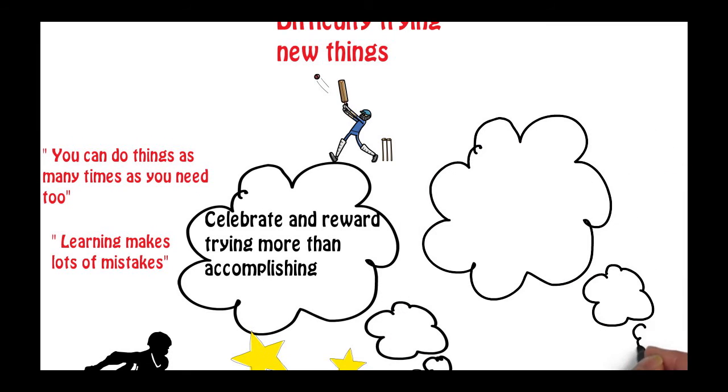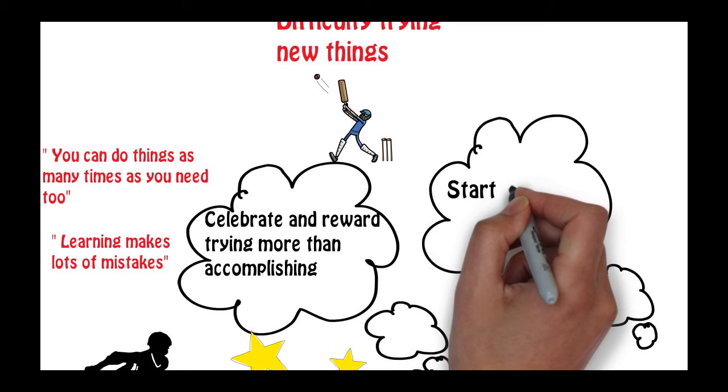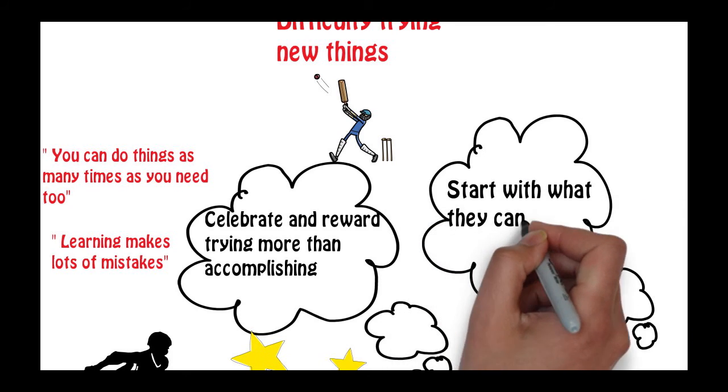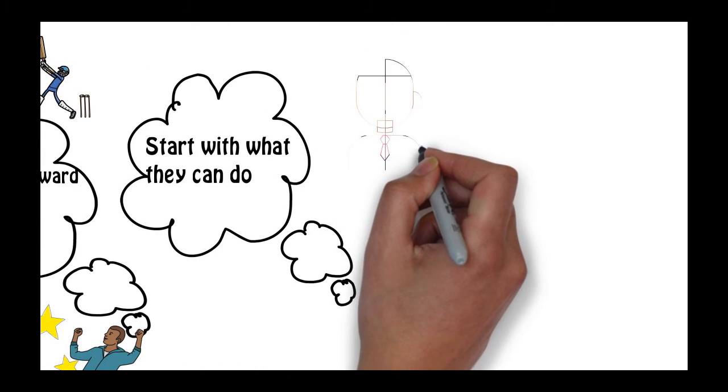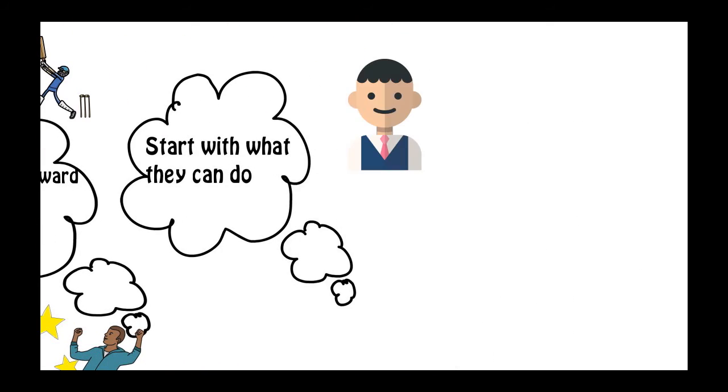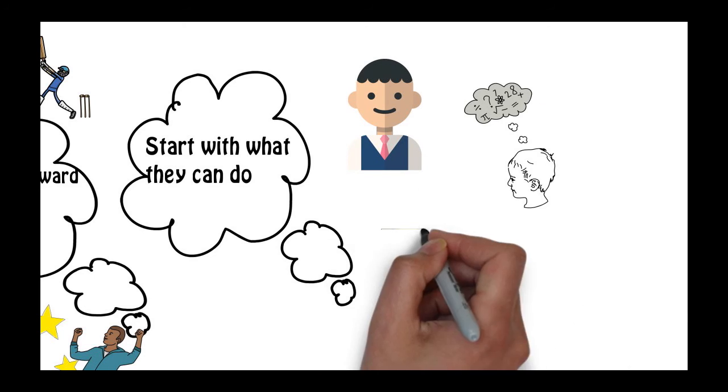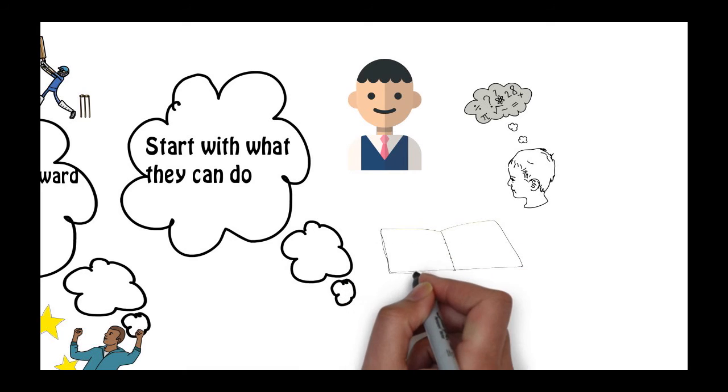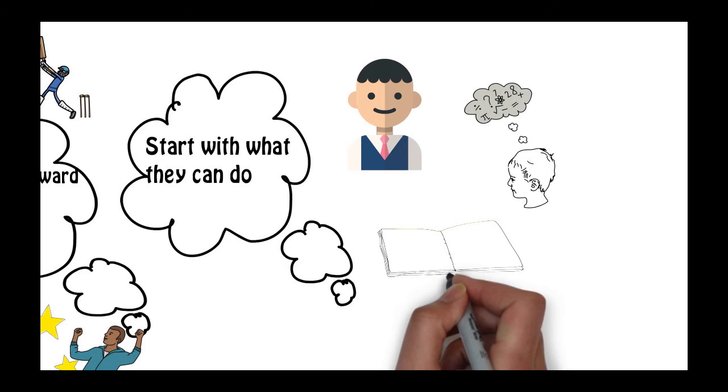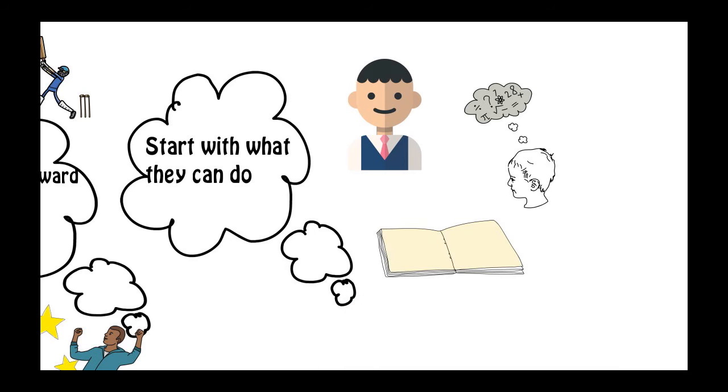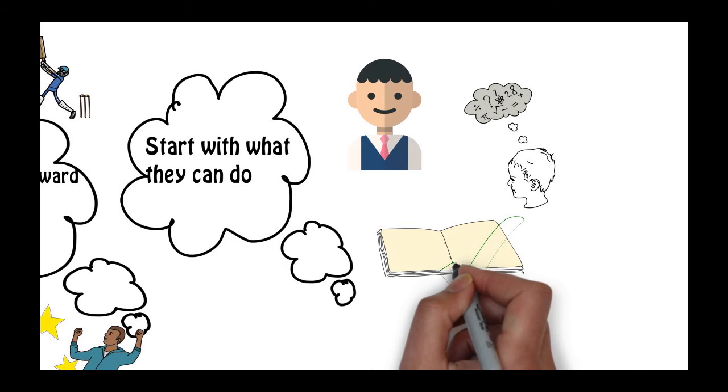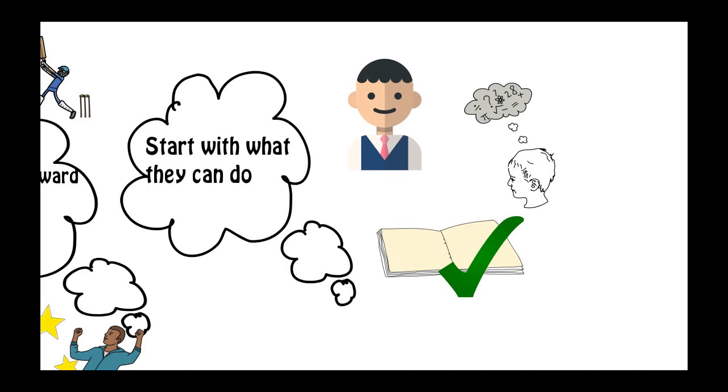The last strategy which I think is really important is to try and start with what they can do. One of my students has a real difficulty within maths and especially trying new things within the arena of maths. So what we started to do was before he would start maybe a new subject such as multiplication, we would put in front of him a piece of work that he could accomplish and we would use this piece of work almost as an anchor.